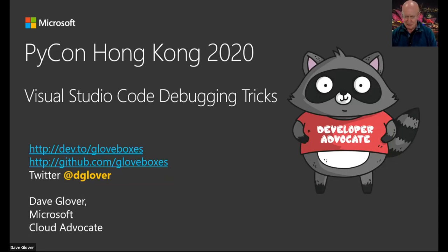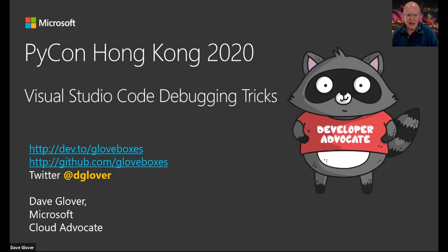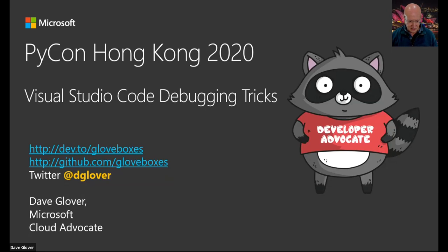Hi, welcome. My name is Dave Glover and I'm what's known as a Cloud Developer Advocate. I work for Microsoft and I'm based in Sydney, Australia. I have a pretty much a focus on the Internet of Things, and within that I do a lot of Python, a lot of C, and a lot of C Sharp — those are the languages I tend to specialize in.